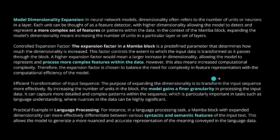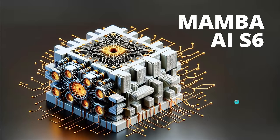Expanding dimensionality transforms the input sequence more effectively. A Mamba block with expanded dimensionality can more effectively differentiate between various syntactic and semantic features in English input text. This increases the performance of the new substituted transformer model — Mamba, or S6.